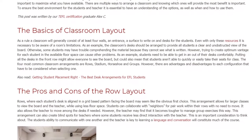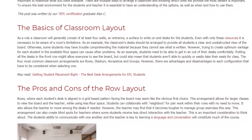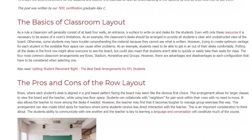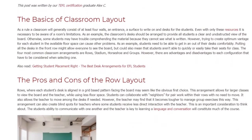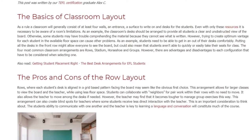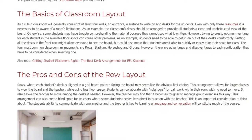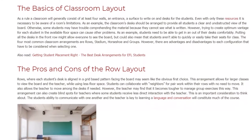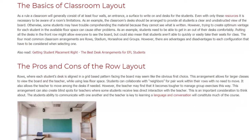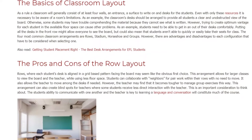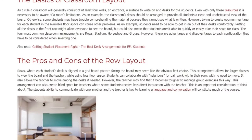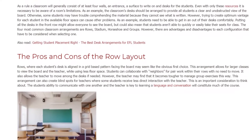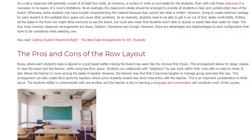The Pros and Cons of the Row Layout. Rows, where each student's desk is aligned in a grid-based pattern facing the board, may seem like the obvious first choice. This arrangement allows for larger classes to view the board and the teacher while using less floor space. Students can collaborate with neighbors for pair work within their rows with no need to move. It also allows the teacher to move among the desks if needed.